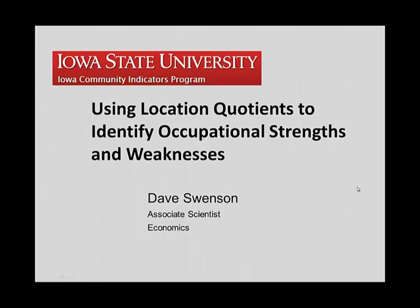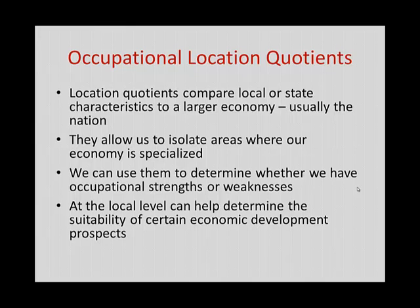In this session we're going to use location quotients to help us isolate our occupational strengths and weaknesses. Location quotients have been demonstrated in previous sessions to help us understand whether we have industrial strengths or weaknesses — categories where we demonstrated an industrial specialization. For example, Iowa has a high location quotient in agriculture because we have significantly more workers in agriculture as a proportion of all workers than the national average. The same can be said for manufacturing, and we'd also find that Iowa has a competitive advantage in the insurance industry.